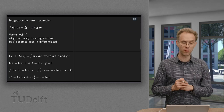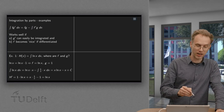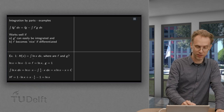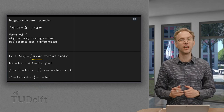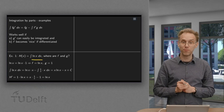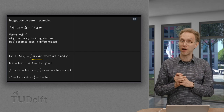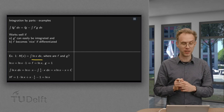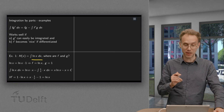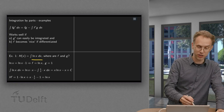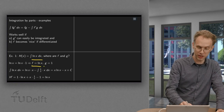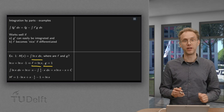Let's look at some more examples. Let us try to compute the antiderivative of ln(x). But wait a minute — we don't have a product here. Where are f and g? Well, ln(x) equals ln(x) times 1.